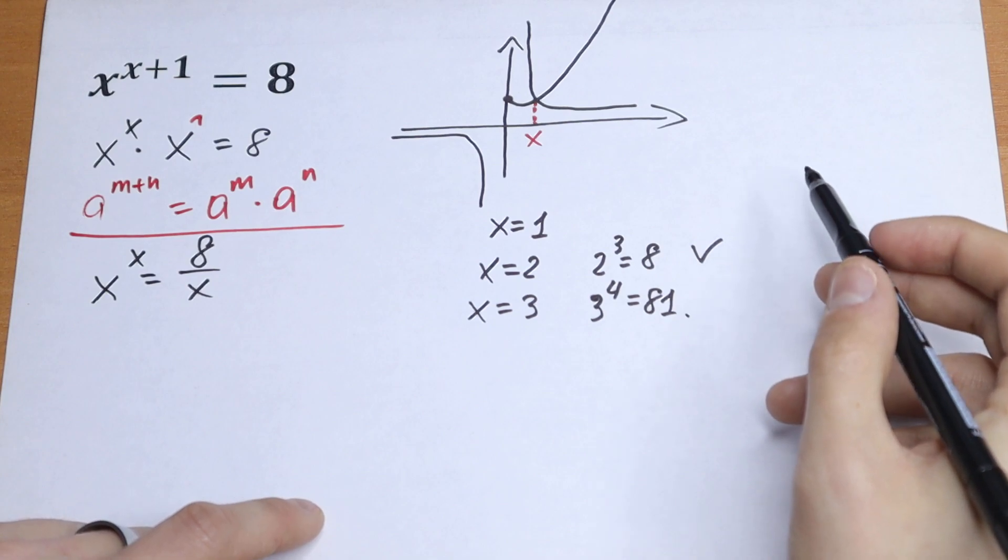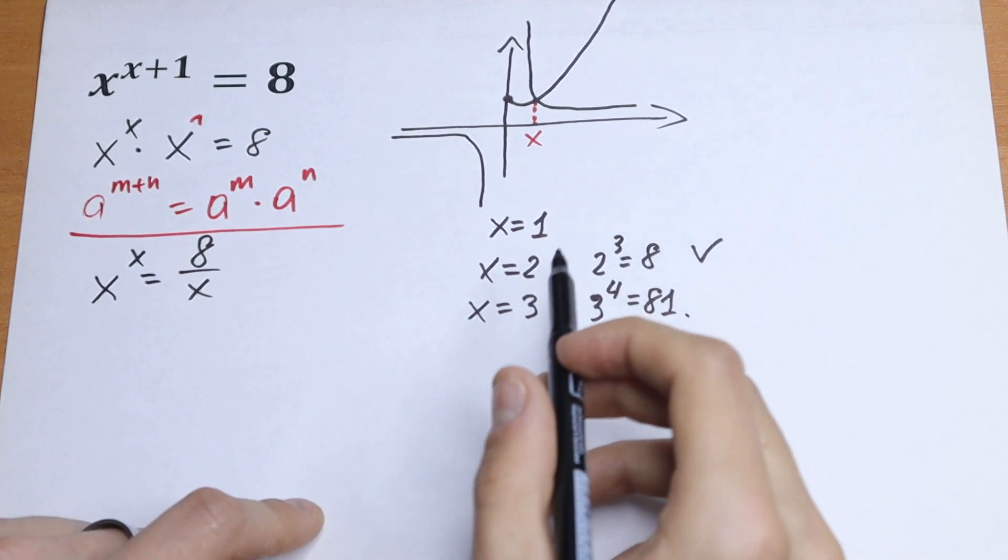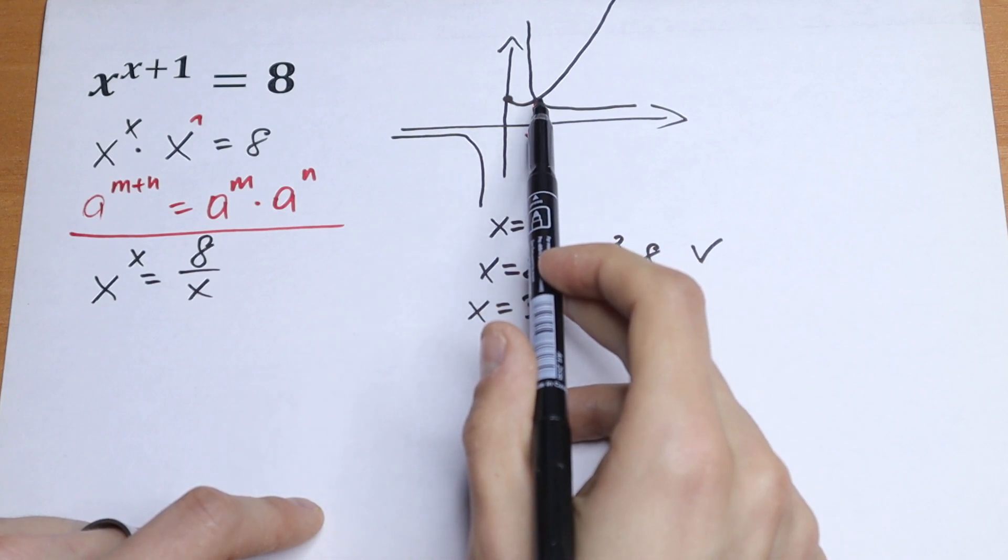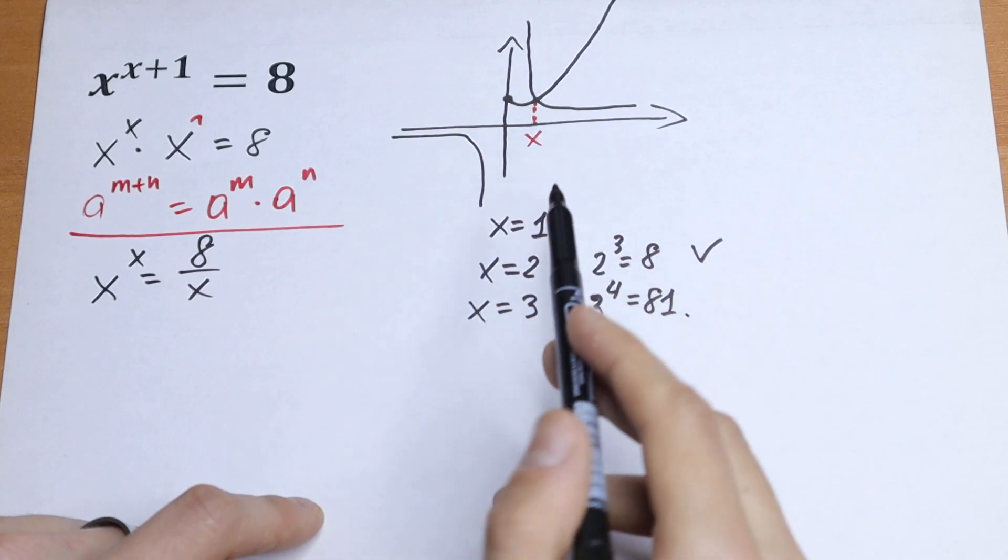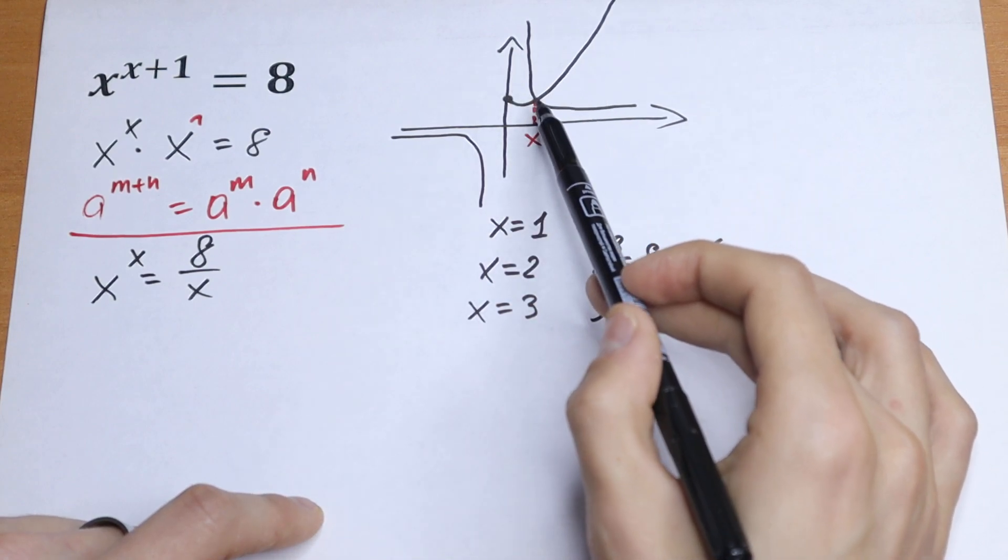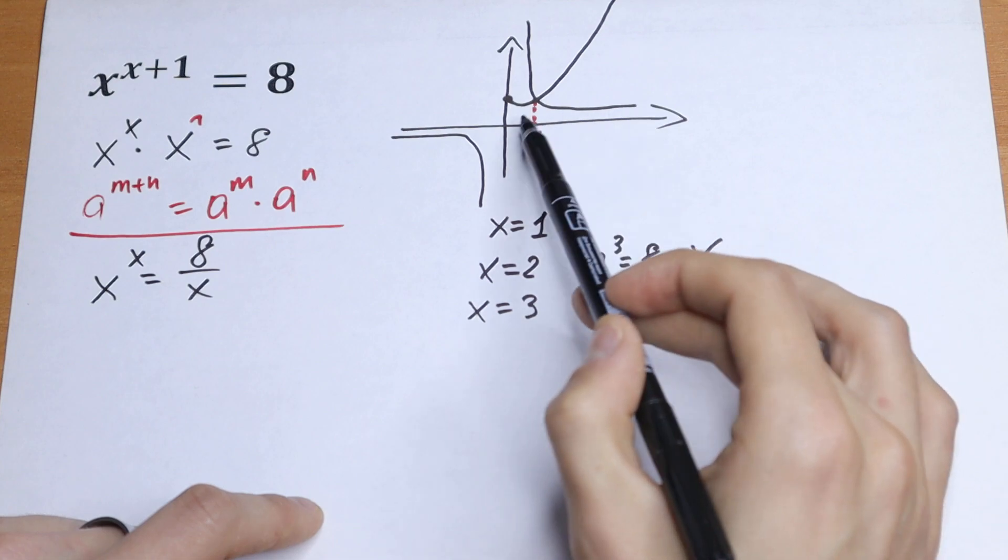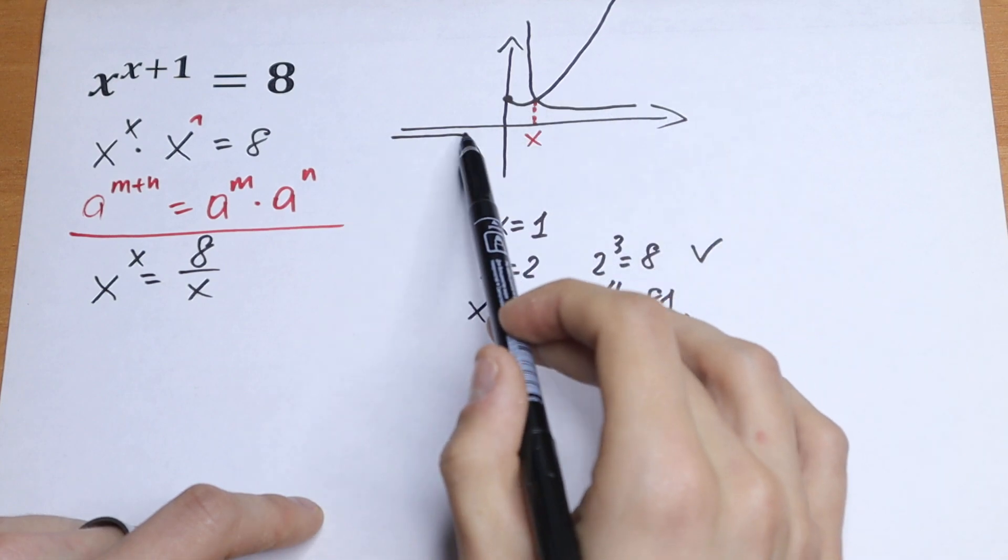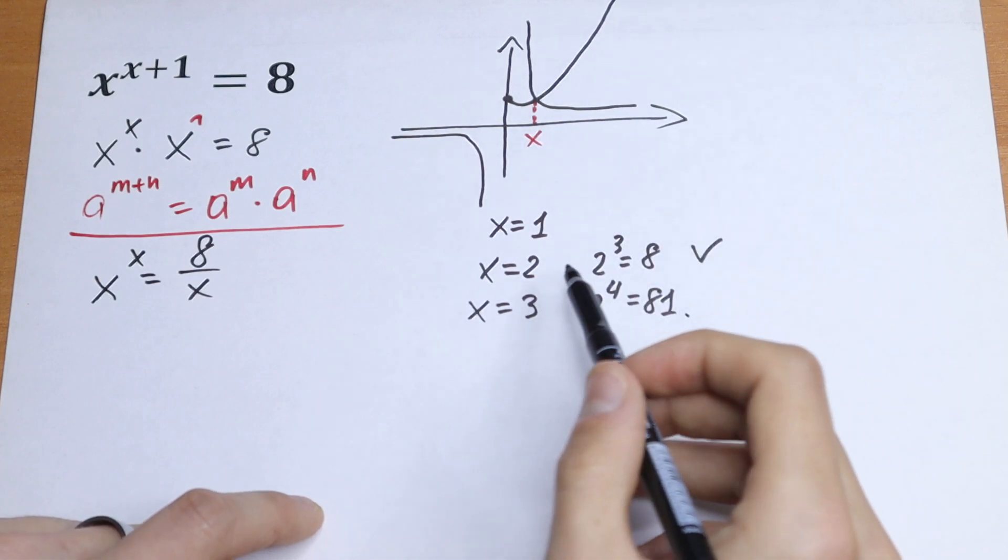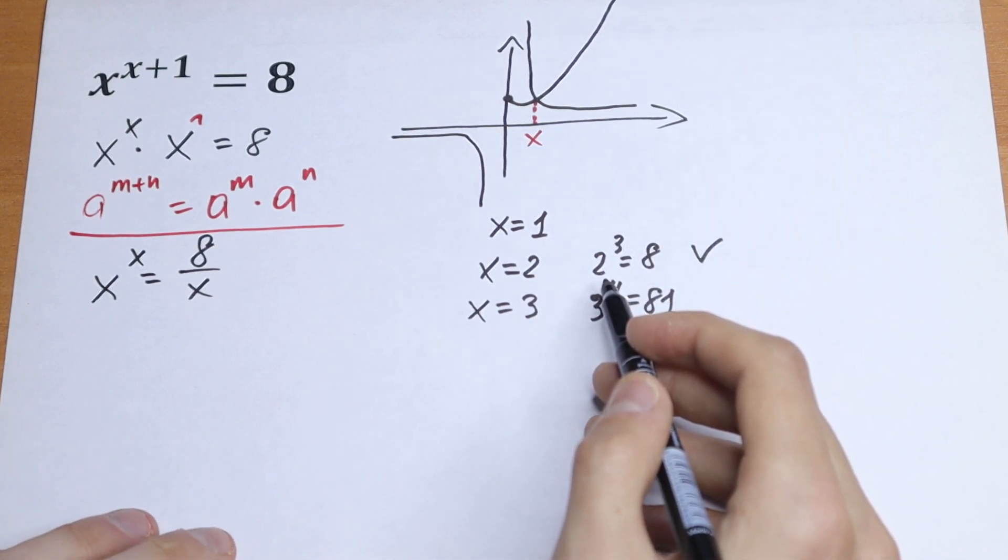So if we're talking about integer solution, one and only solution, it will be x equal to 2. And look into this graph, we can see that this will be one and only solution, because our branches intersect only at one point in this positive x. So our answer: x equal to 2.